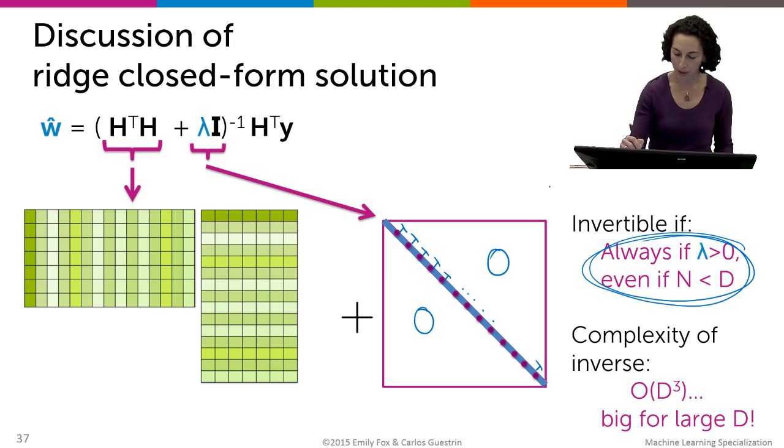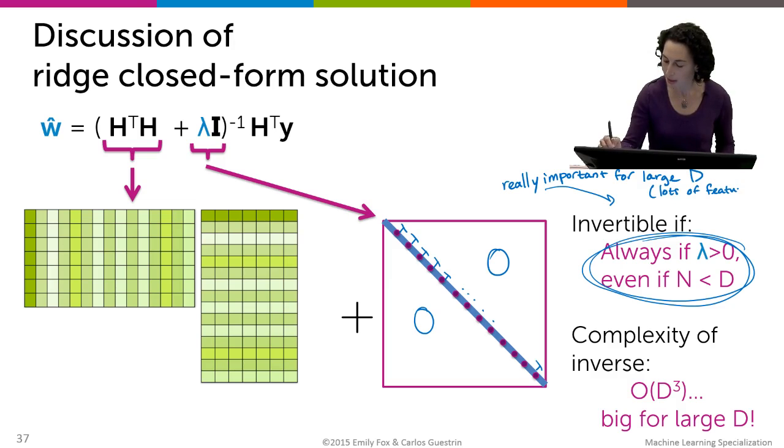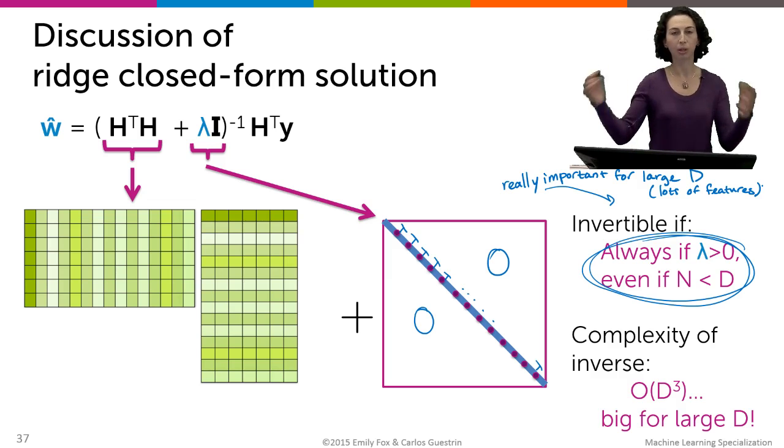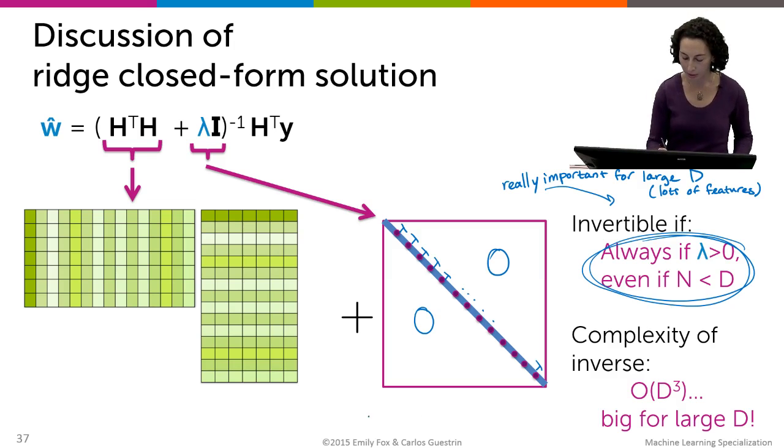So this is really important when you have lots of features. So for large d which is lots of features and remember that's how we motivated using ridge regression. We're in these really complicated models where you have lots and lots of features, a lot of flexibility and the potential to overfit. Now we see something very explicit about how it helps us.